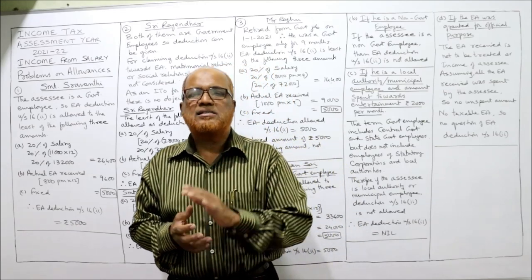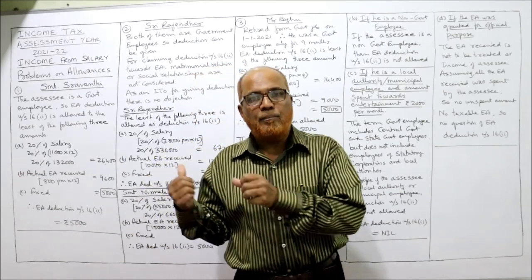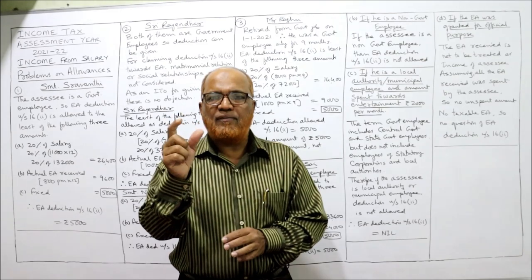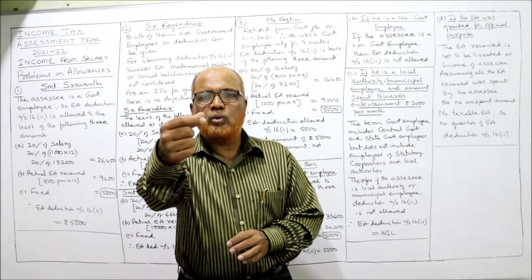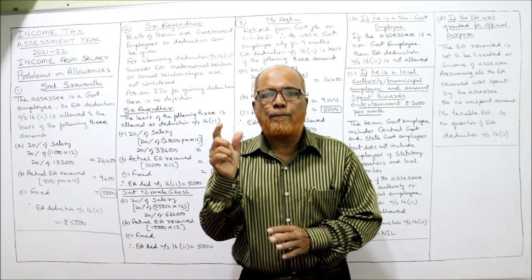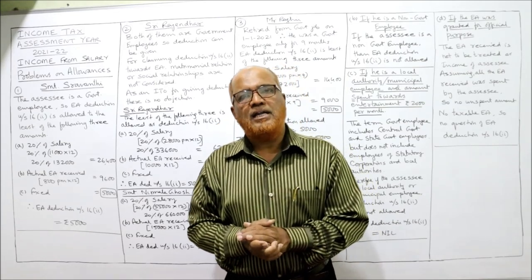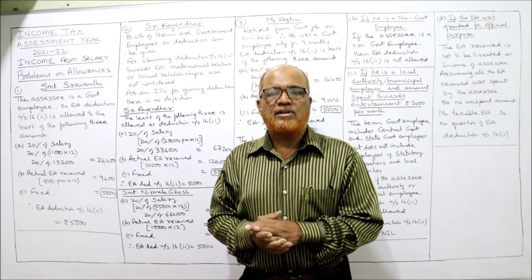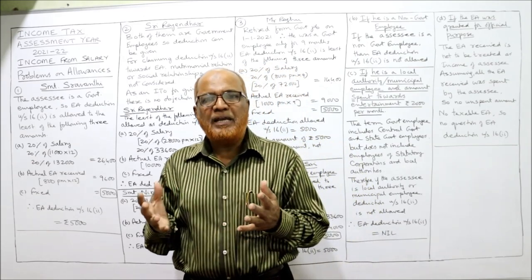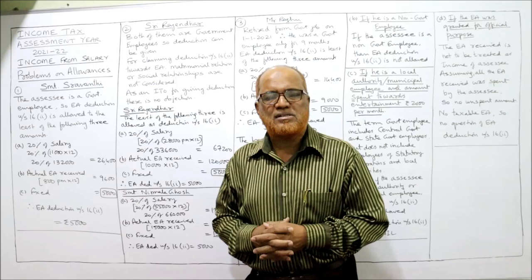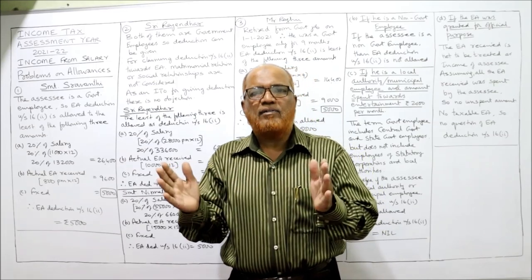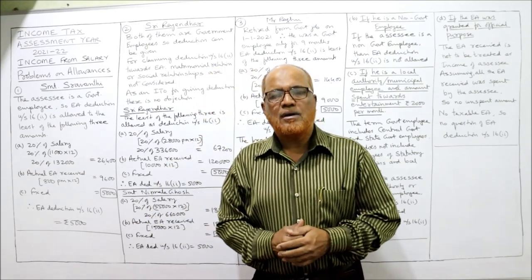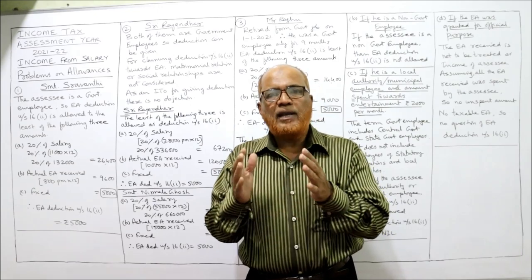Be clear about the meaning of the term allowances, classification of allowances, and the provisions of exemption and taxability of allowances before coming to this video. Allowance means a fixed monetary benefit given by an employer to an employee for a specific purpose. Examples are dearness allowance (DA), city compensatory allowance (CCA), medical allowance, project allowance, lunch allowance, meal allowance, and many more. The Income Tax Act divides allowances into different categories: fully taxable, fully exempted, and partly taxable allowances.